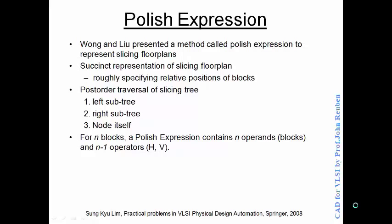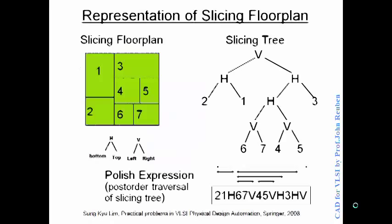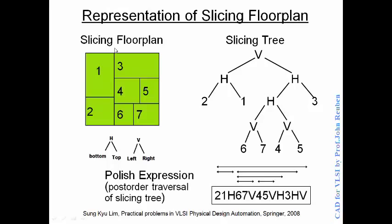What is a post-order traversal of a slicing tree? It is just traversing through the tree by visiting the left subtree first, the right subtree next, and the node itself. If you remember in the last lecture we had looked at a slicing floor plan. We had followed a convention where when it is a horizontal cut you place what is on the bottom at the left and what is on the top on the right. And so we got this as the slicing tree for that slicing floor plan.